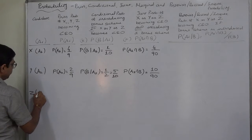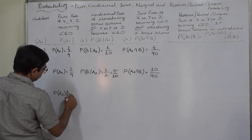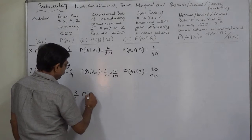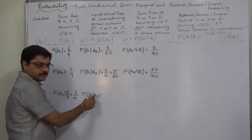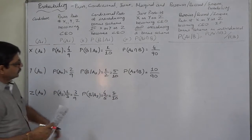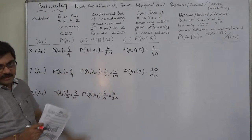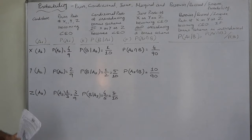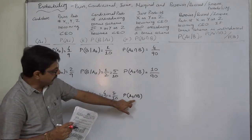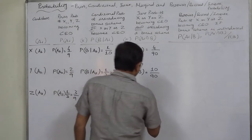The third candidate is Z, using sign A3. P(A3), probability of Z becoming CEO, is 1 by 3, that is 3 by 9 — maintaining the same denominator. P(B|A3), the probability of introducing a bonus scheme if Z becomes CEO, is given to be 4 by 5, that is 8 by 10. The summation of these three conditional probabilities can be less than 1, exactly 1, or greater than 1. P(A3 ∩ B): 3 by 9 into 8 by 10 equals 24 by 90.